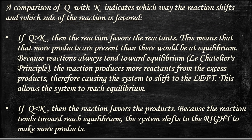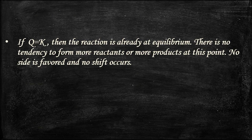A comparison of Q with K indicates which way the reaction shifts and which side is favored. If Q is greater than K, the reaction favors the reactants, meaning more products are present than at equilibrium. As reactions always tend towards equilibrium per Le Chatelier's principle, the reaction produces more reactants from excess products, causing the system to shift to the left. If Q is less than K, the reaction favors the products and the system shifts to the right to make more products. If Q equals K, the reaction is already at equilibrium — no tendency to form more reactants or products, and no shift occurs.